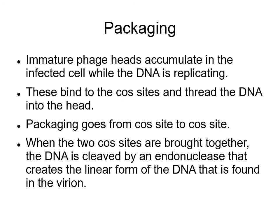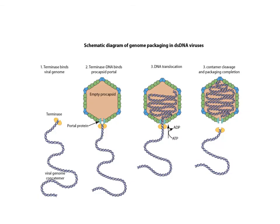Meanwhile, immature phage heads are accumulating while the DNA is replicating. The cos sites on the DNA bind to proteins associated with the immature phage heads, and they join together for the packaging reactions. The DNA interacts with proteins at the entry point of the empty capsid, and DNA is threaded in by a molecular machine. The process continues until another cos site is encountered — packaging goes from cos site to cos site — and when the second cos site is encountered, the DNA is cleaved. The immature virion capsid is then matured by addition of its tail. Cos sites are critical: no cos, no packaging; no packaging, no generalized transduction.